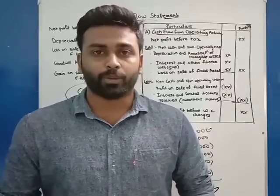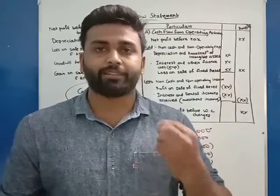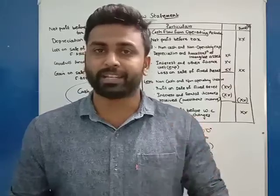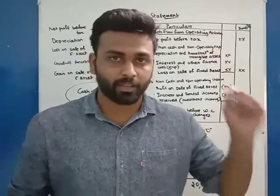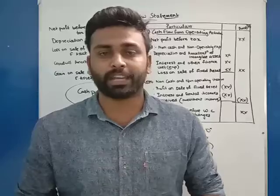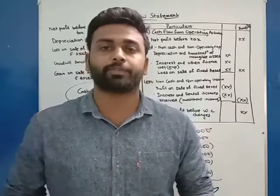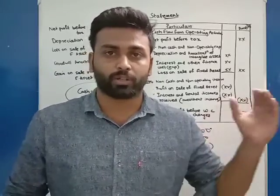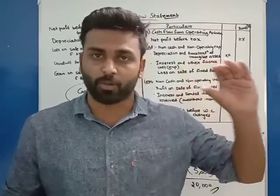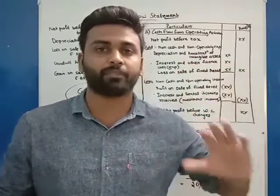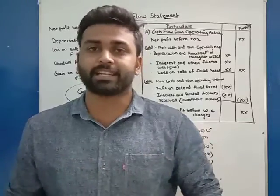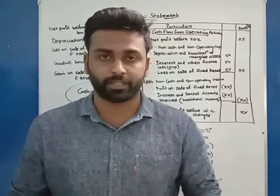In the previous video, I explained that the total cash flow statement is divided into three: cash flow from operating activity, cash flow from investing activity, and cash flow from financing activity. The statement is also in this order — first operating, then investing, then financing. So first, we will discuss cash flow from operating activity.